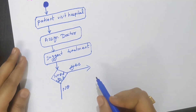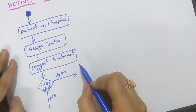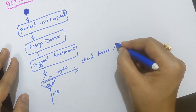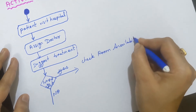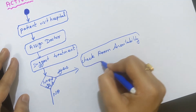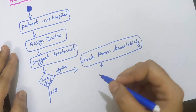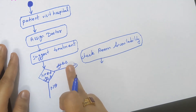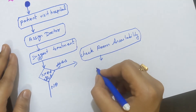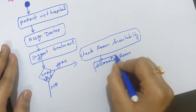If yes — the patient needs to get admitted — the first step is to check room availability, because a room must be available to allocate to the patient. After checking availability, the next activity is to allocate the room to the patient.